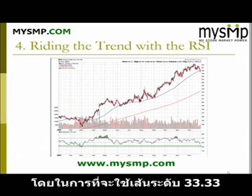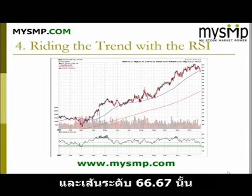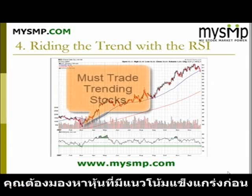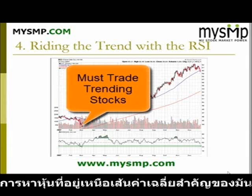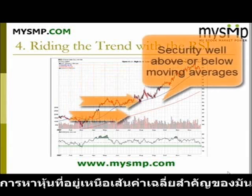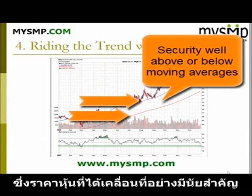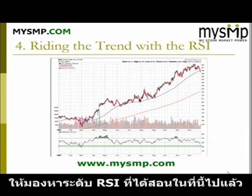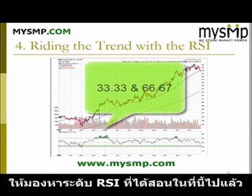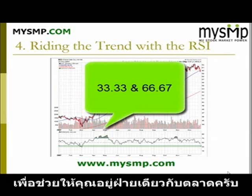Beyond identifying the 33.33 and 66.67 levels, a trader must first identify a security that is trending strongly. Another method for identifying strongly trending securities is whether they are above or below all of their respective moving averages. This also implies that the security is experiencing a strong move in either direction. Once you are able to identify the trend, look for these hidden RSI levels described in this course to keep you on the right side of the market.